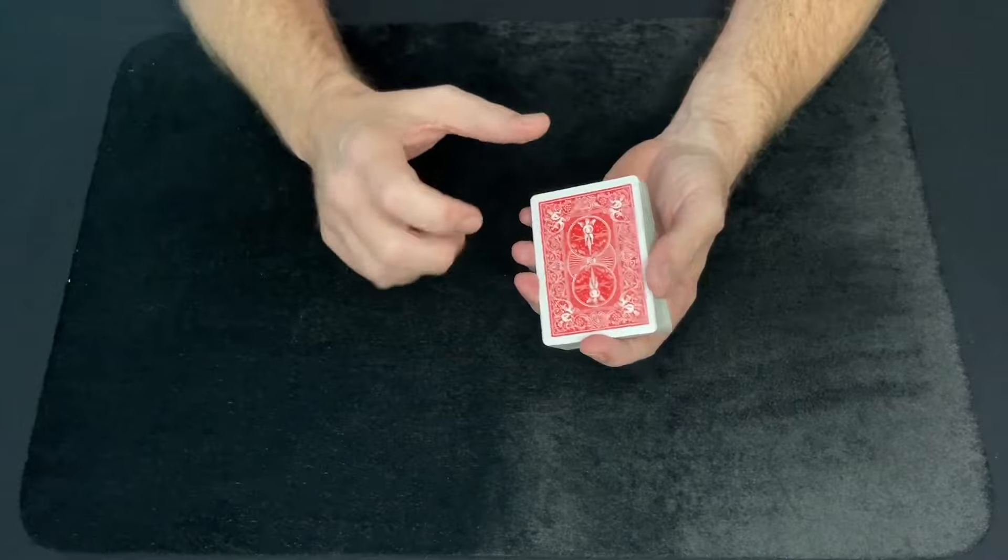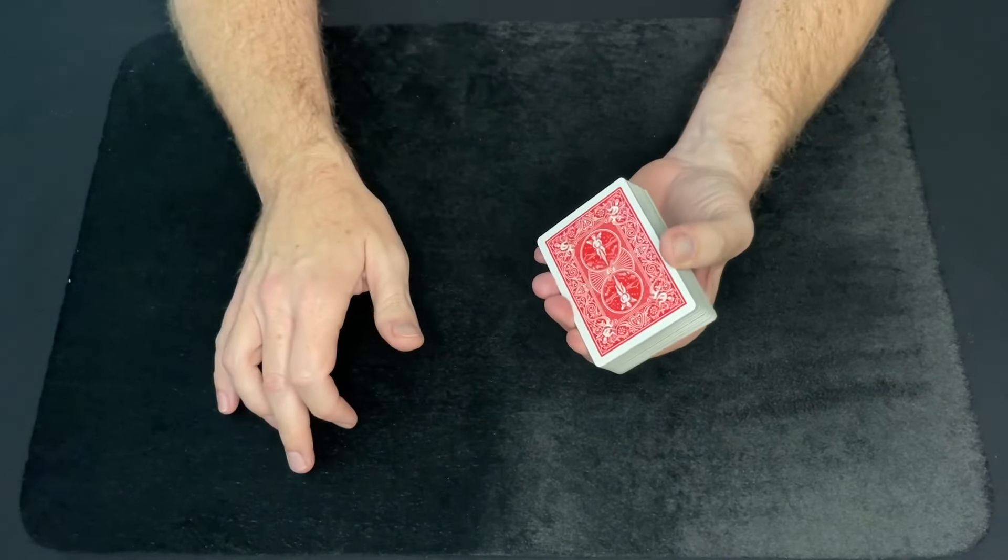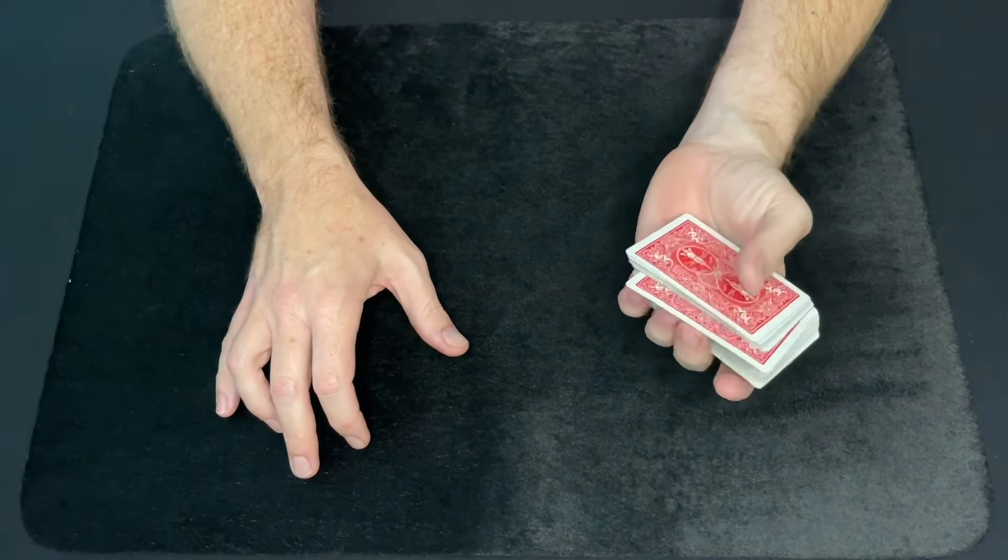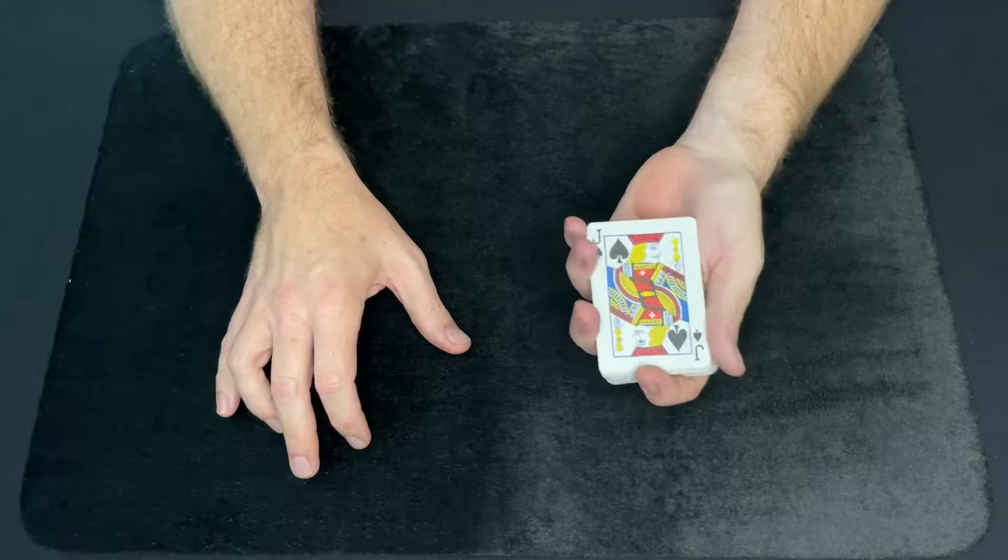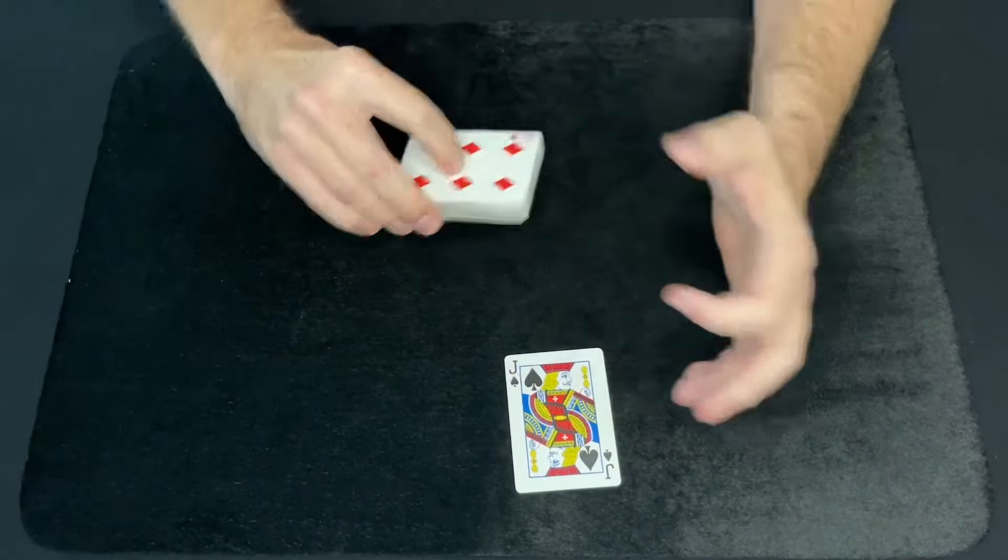But however, you know that their card is approximately 22 from the bottom. So if you just take the cards and give it a nice one-handed cut, you can cut right to their selected card, the Jack of Spades. Was that your card? And that's the one-handed discovery.